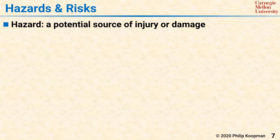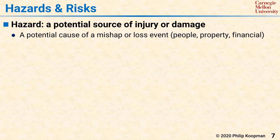The safety cycle typically begins with identifying hazards, which are potential sources of injury or damage. In other words, a hazard is a potential cause of a mishap or loss event involving personal injury, death, environmental damage, or some other form of unacceptable loss.